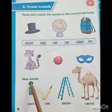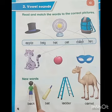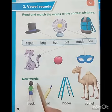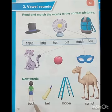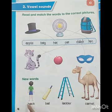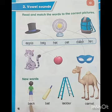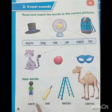Now here are some new words on this page. We have to read them, in which we use vowel A. Like this is a bag, and here is a vowel A in it. Now make the sound with me. B makes sound B, A makes sound A, G makes sound G. Bag.